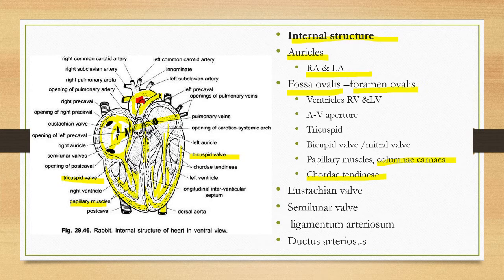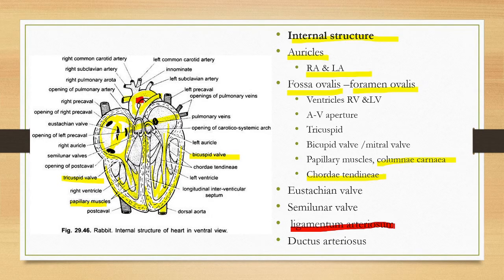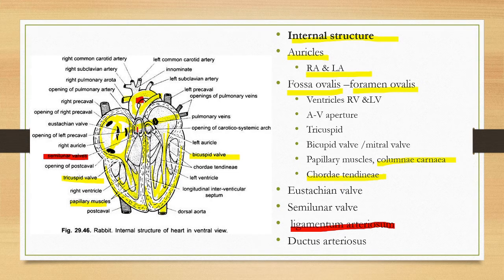This structure is called the ductus arteriosus. In the embryonic condition, the pulmonary aorta and the carotico-systemic aorta are connected with each other through the ductus arteriosus, also called the duct of Botalli. The openings of both the pulmonary artery and the systemic aorta are guarded by semilunar valves.